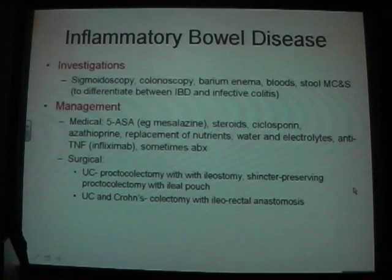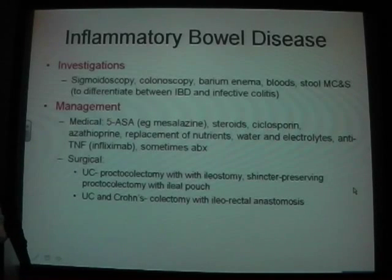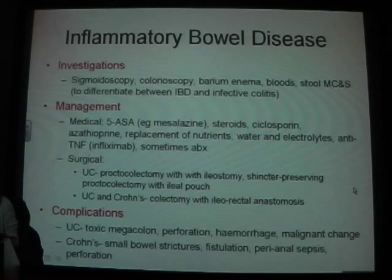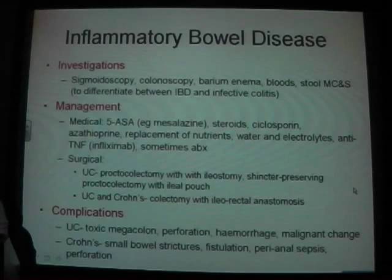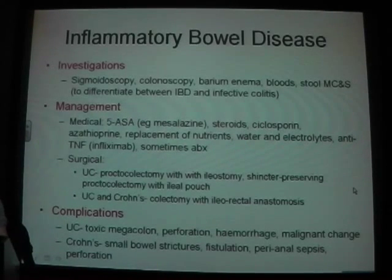Most patients are treated medically and should make good recovery. However, if attacks happen very often and medical management is failing, and the patient is young and fit enough for an operation, that would be a good indication for surgery — essentially resecting some of the bowel. Complications of ulcerative colitis include toxic megacolon, perforation, haemorrhage, and malignant change — malignancy is more associated with ulcerative colitis. Crohn's complications include small bowel strictures, fistulation, perianal sepsis, and perforation.